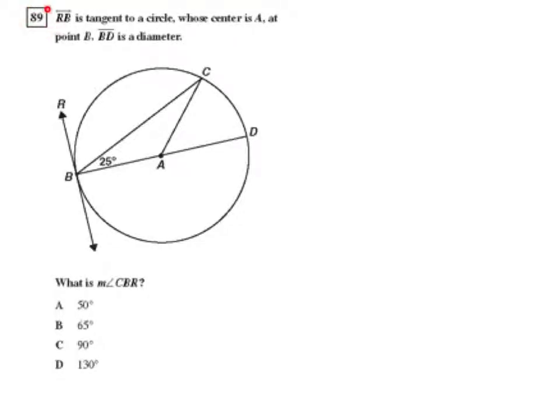Okay, here we have question 89 from the Geometry CST release test questions. Line segment RB is tangent to a circle, whose center is at A, at point B. BD is a diameter.